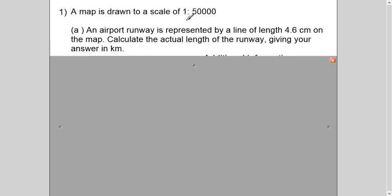This scale is given to you, 1 is to 50,000, no unit is mentioned here. So when it is given like this, it means both are in centimeters. So this is your map, and this is your land. It is about the length of the runway. And it is saying, if the line of length is 4.6 centimeter on the map, then what is the actual length of the runway in kilometers. There are two ways to solve this question. I'll explain both ways.